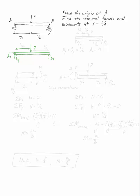By symmetry you can say AY equals BY equals P over 2 and AX equals 0. Or you can go through and solve the equilibrium equations, it's the same thing.